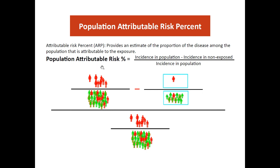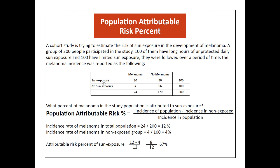The formula is: incidence in the population minus incidence in non-exposed, divided by incidence in the whole population. For the same example, the incidence in the whole population is 24 divided by 200, which is 12%. Subtracting the non-exposed rate of 4% gives 8%, divided by 12%, which equals 67%. Thank you.